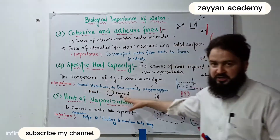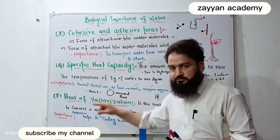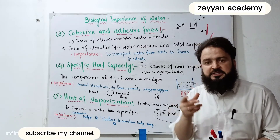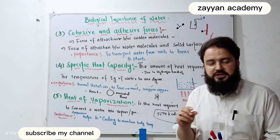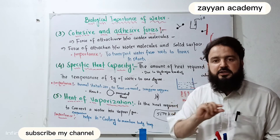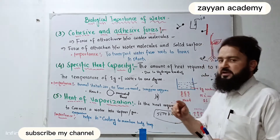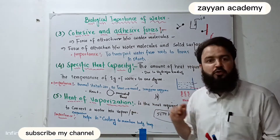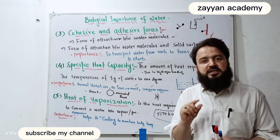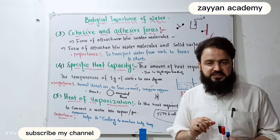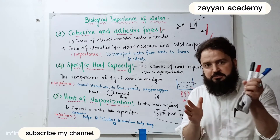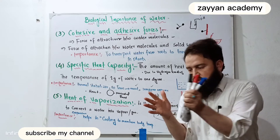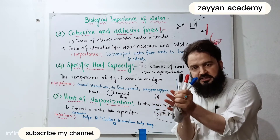Protective roles. Water acts as a lubricant for organs and fluid. For example, pericardial fluid acts as a lubricant — for example, during heartbeat, the fluid surrounds the heart.